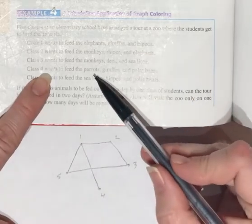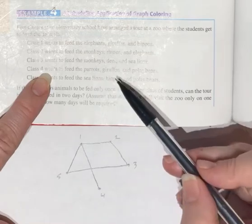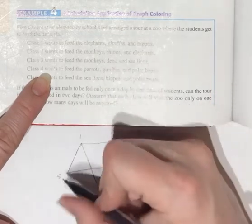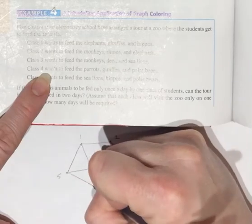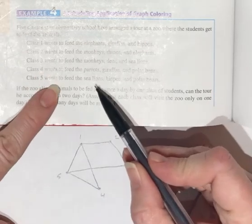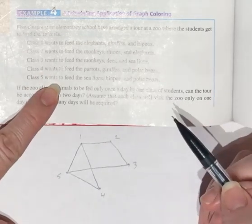Moving on to class four. Parrots. Nobody else wants to feed the parrots. Giraffes. And polar bears. We're gonna have class four and five. And then I should have them all.